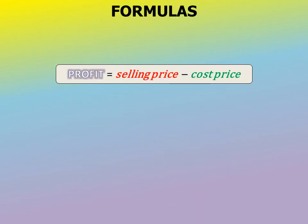Whenever we're calculating profit, we use a simple formula: Profit = Selling Price minus Cost Price. The selling price is the amount you sell a product for; the cost price is the amount it costs you to purchase the goods. To find the profit, we subtract the cost price from the selling price.